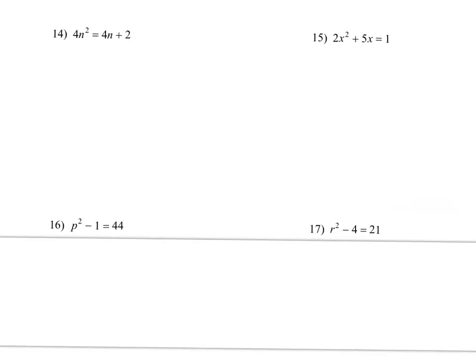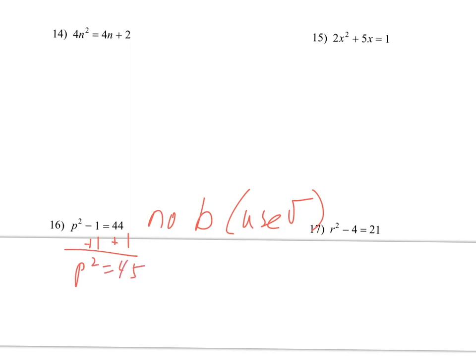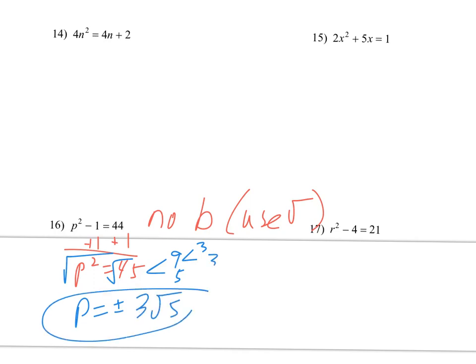I'll do number 16. For this one, I see that there's no b value. And whenever there's no b value, you can use square roots to solve — this is kind of the only time you can do this. So I get p squared equals 45 and I take the square root. It's p equals plus or minus something. I don't know the square root of 45, so I'll break it down as 9 and 5, which gives a 3 and 3. So this will just be 3 rad 5. But since I created that square root, I do need that plus or minus in front of it.